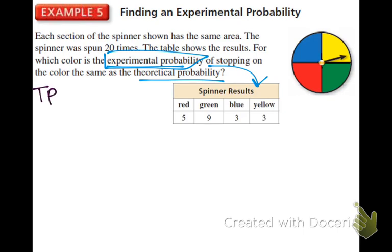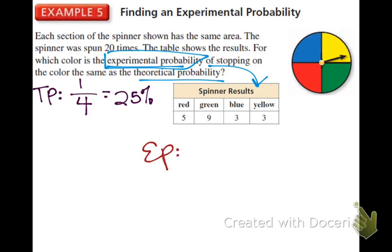We need to figure out what the theoretical probability is first — I'll write TP for theoretical probability. How many spaces are there total on the spinner? Four. The odds of getting any one out of four is 25%. Experimental probability is based off of the chart, based off of how many total tests there were. How many total times did they spin it? 20.